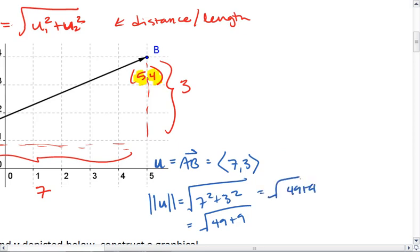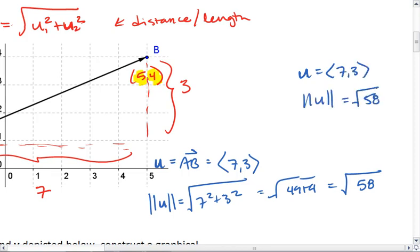So this is the square root of 58. Thus, U has component form 7, 3, and magnitude of root 58. Let's look at another example.